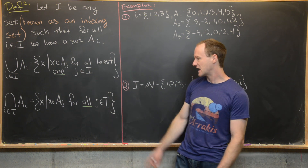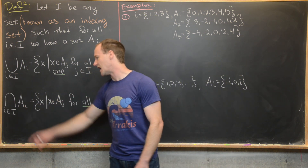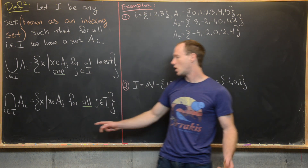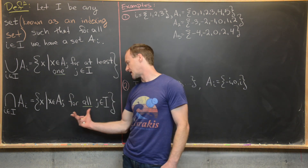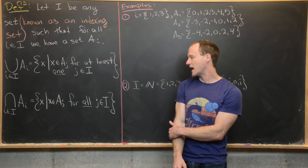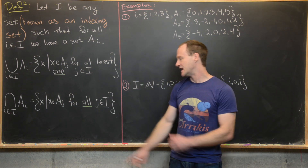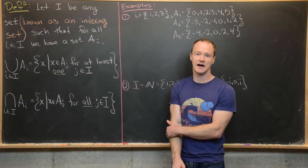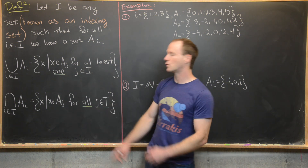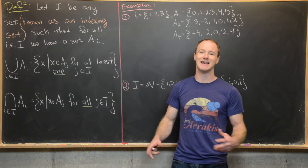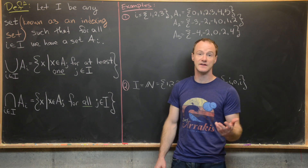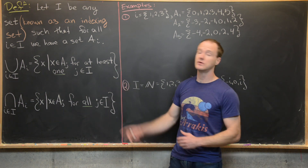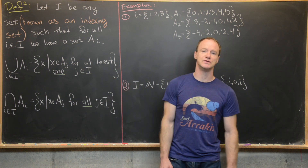Next, the intersection of the A_i over this indexing set is all x that satisfy this rule: x is in A_j for all j in I. You can think of this 'for all' as like an AND statement, if you want to relate this back to the intersection and union of just two sets.